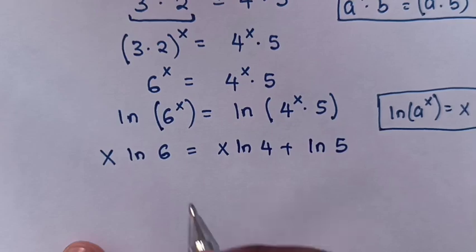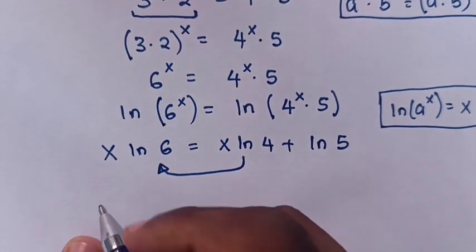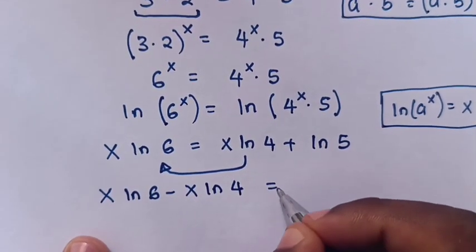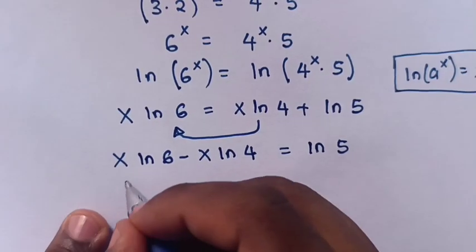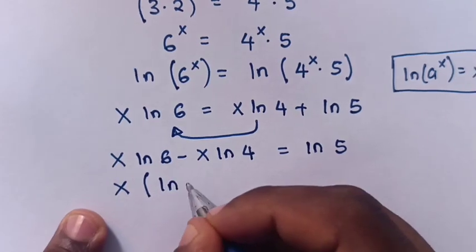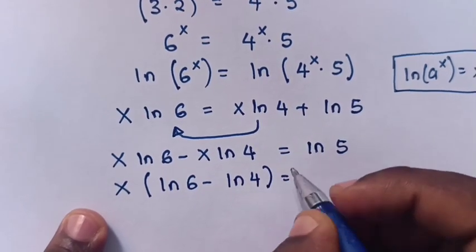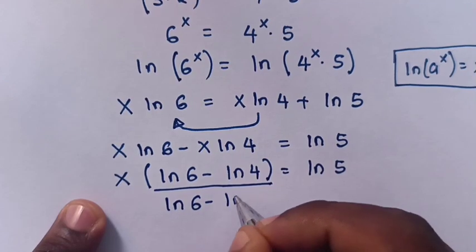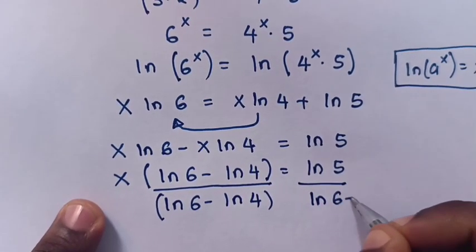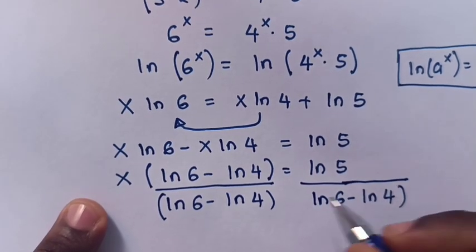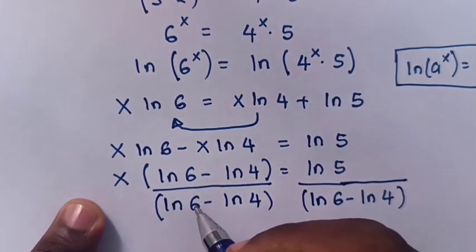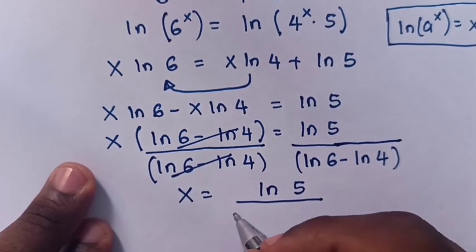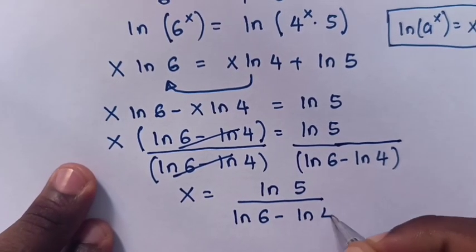Then we move x·ln(4) to the left side. So it will be x·ln(6) minus x·ln(4) is equal to ln(5). Now x is common, so x times (ln(6) minus ln(4)) is equal to ln(5). Then we divide by (ln(6) minus ln(4)) on both sides and cancel.